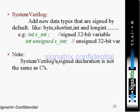Now we will see what is happening in SystemVerilog. SystemVerilog adds new data types that are signed by default. By default all are signed, like byte, short int, int, long int. All are new data types, all are by default signed ones. Now int s underscore int, this is a variable name. If you are declaring like this, the implicit meaning of this s underscore int is signed thirty-two bit variable. If you are declaring like this, int unsigned, unsigned is a keyword, that is the meaning. Now SystemVerilog signed declaration is not the same as C's.